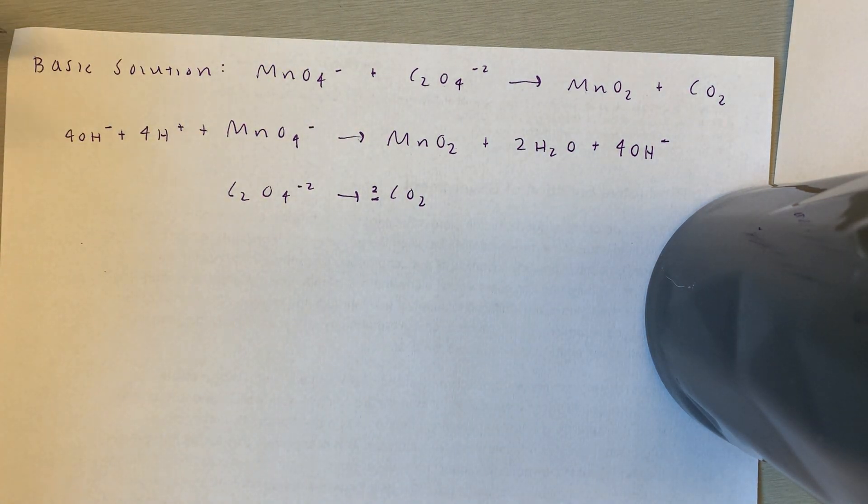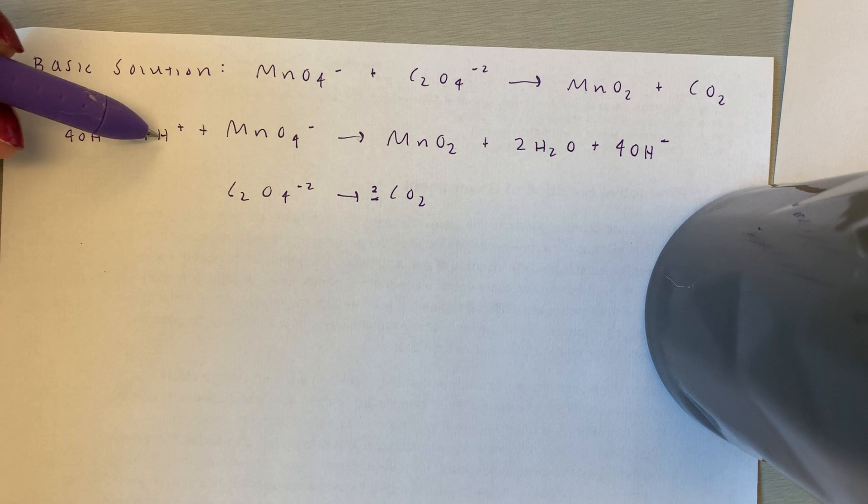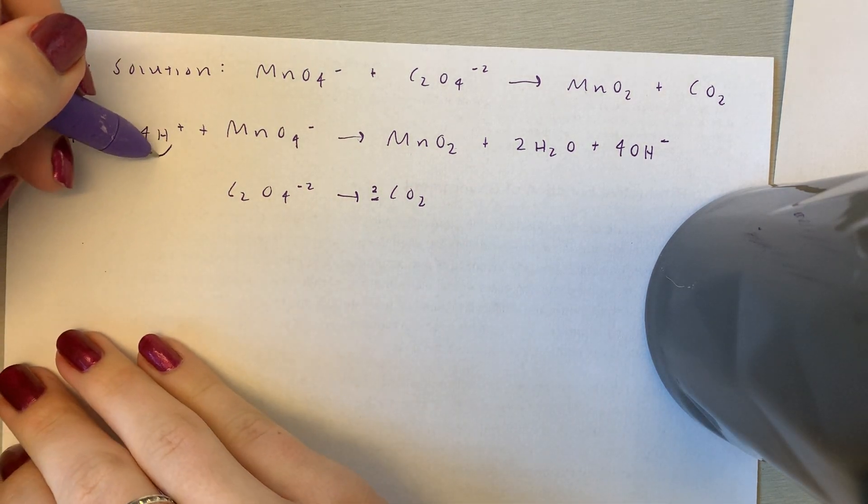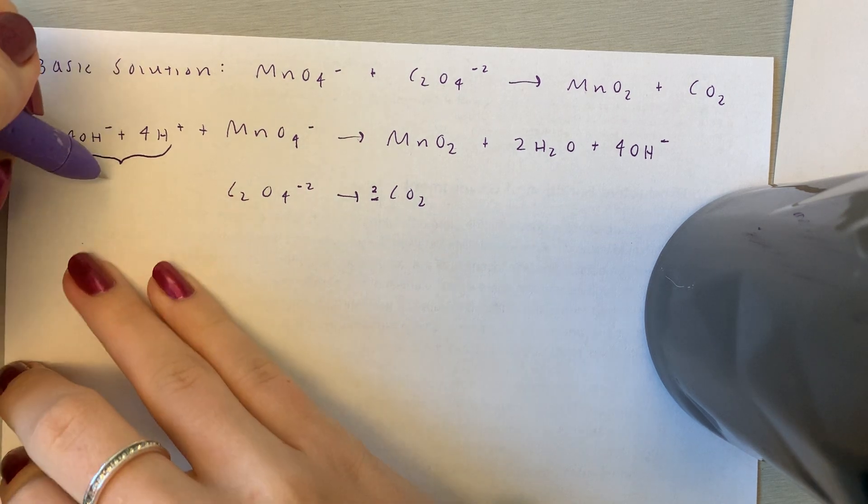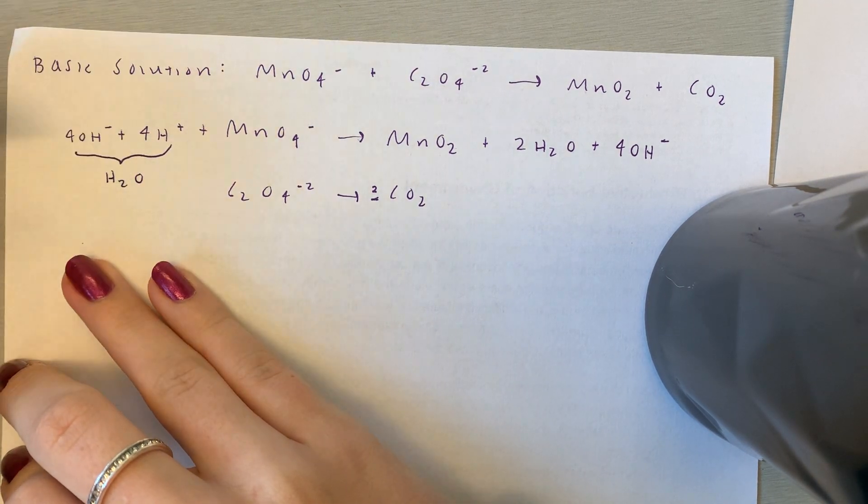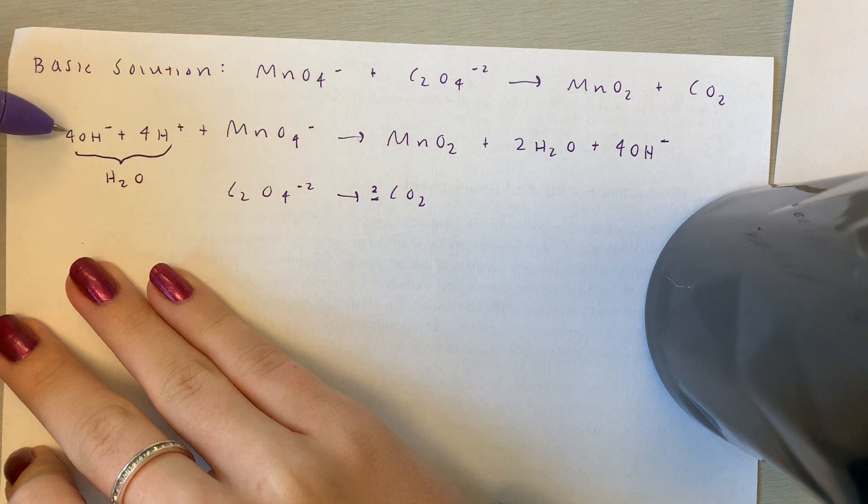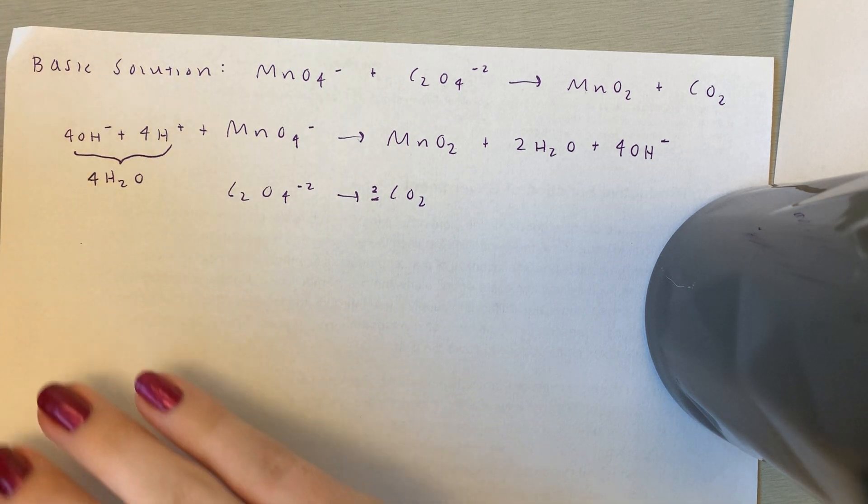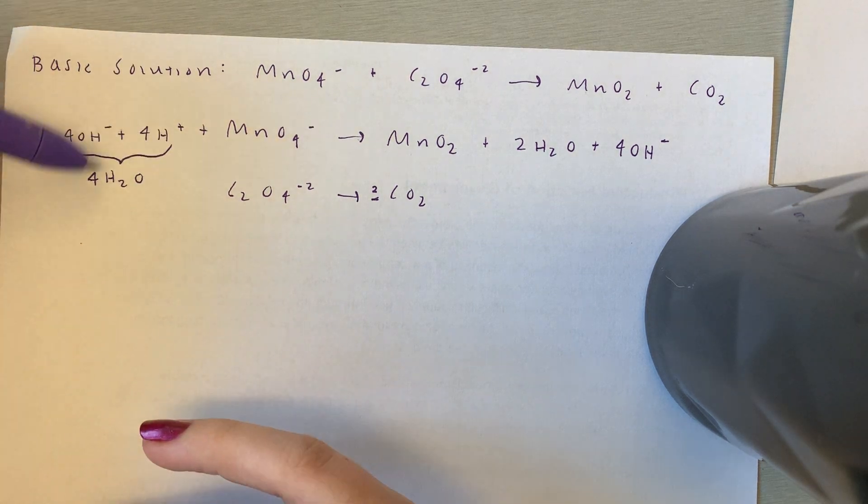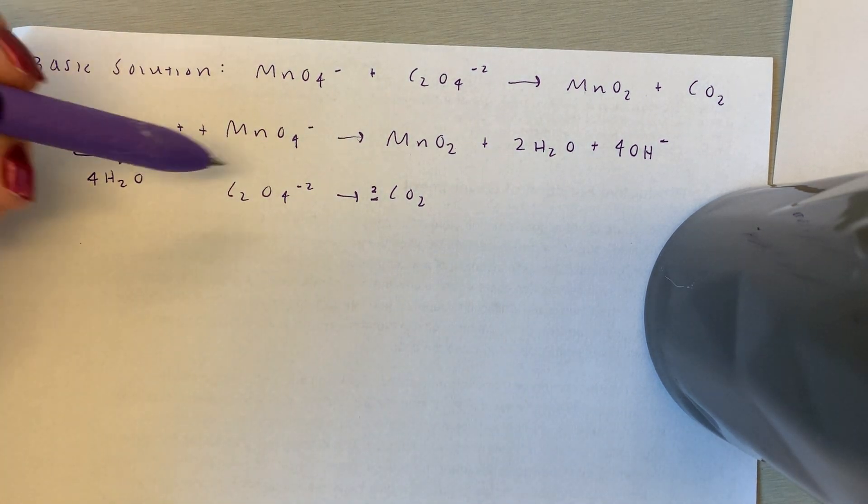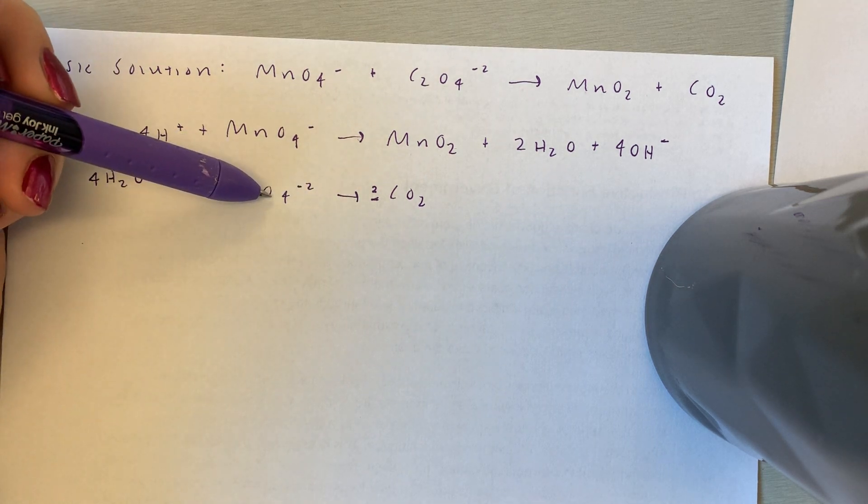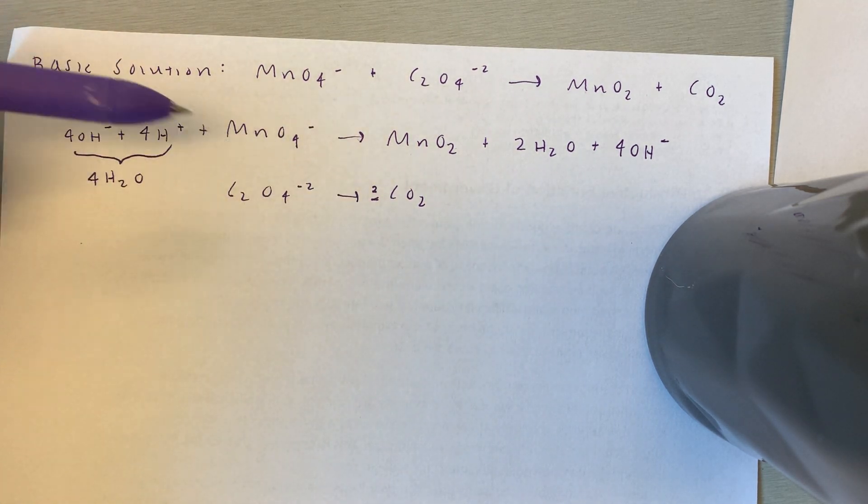And since we know that hydroxide plus hydrogen ions gives us water, what helps me is to just remind myself that this is a water molecule. And since there's four of each of these, that means that there's four water molecules. Okay, so that's how we do the first half reaction. And for this one, this one's easy because there's already two carbons and four oxygens on either side. So we're good.